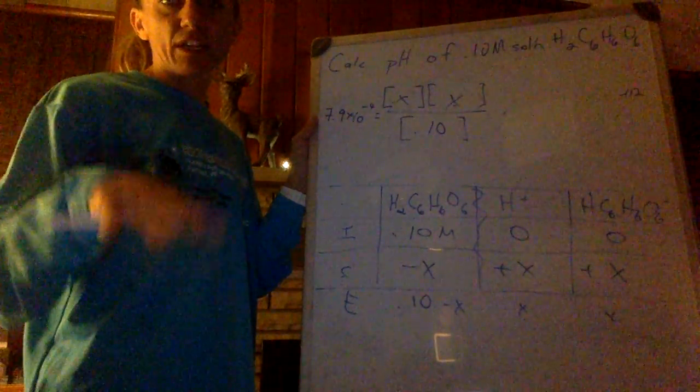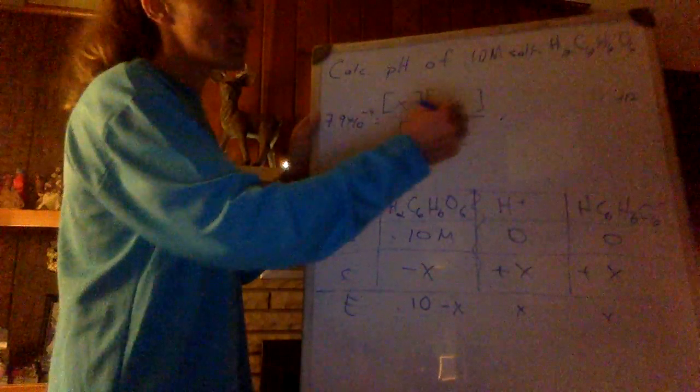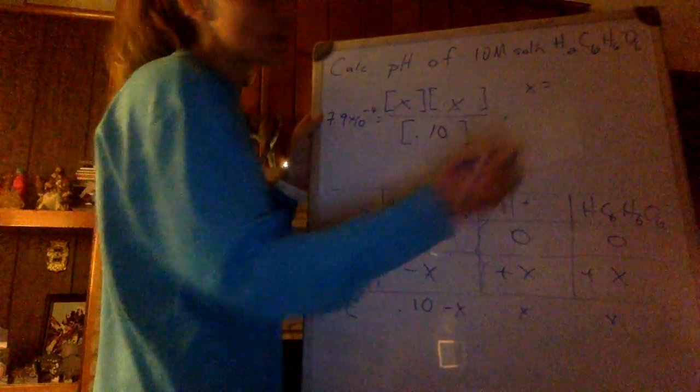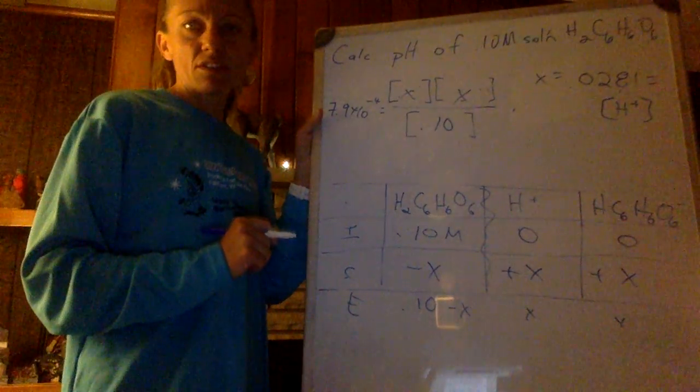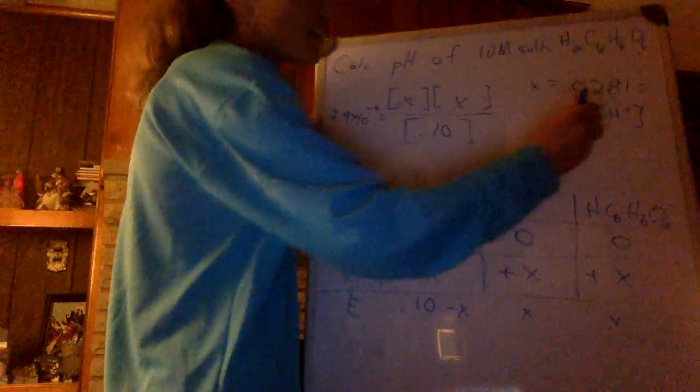Yes, there's a large Ka. I'm ignoring this. And I'm still solving for x, getting x equals, and make sure you can do this on your calculator, 0.0281. And remember, that's my concentration of hydrogen. Negative log of this, 1.55. And that's my pH from this equation.